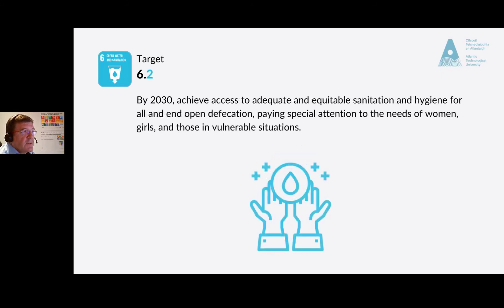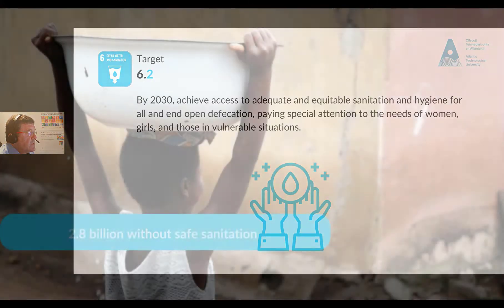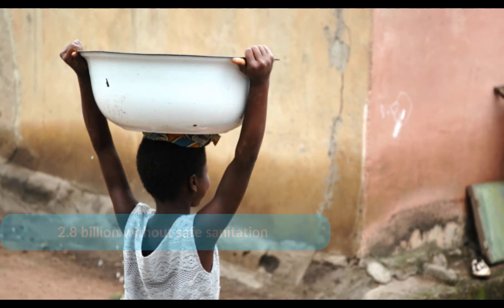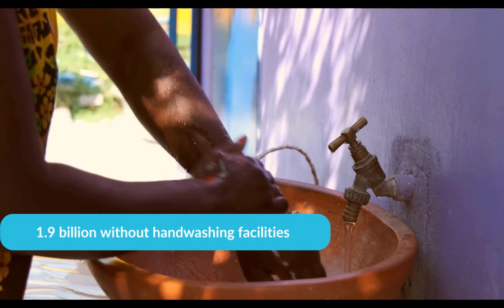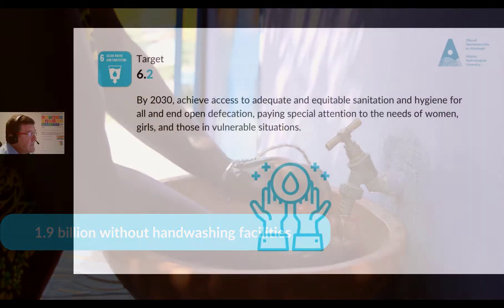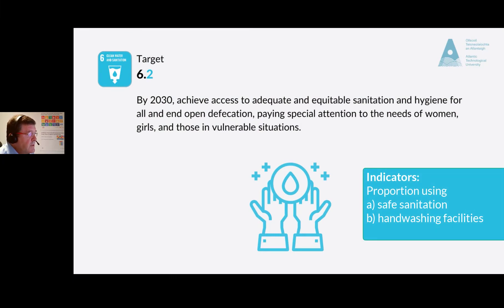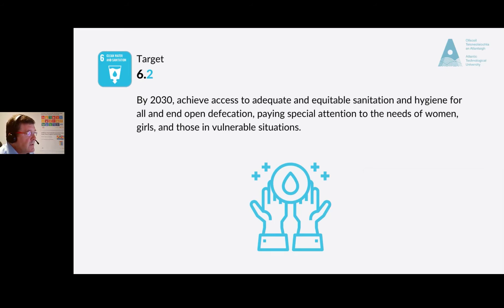Target 6.2: by 2030, achieve access to adequate and equitable sanitation and hygiene for all, and end open defecation, paying special attention to the needs of women, girls, and those in vulnerable situations. It is predicted that by 2030 only 67% will have safe sanitation services, meaning 2.8 billion people will be without, and only 78% will have basic hand washing facilities, leaving 1.9 billion without. The indicators are the proportion of people using safely managed sanitation and a hand washing facility with soap and water.